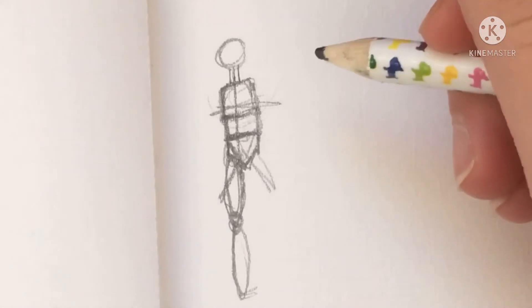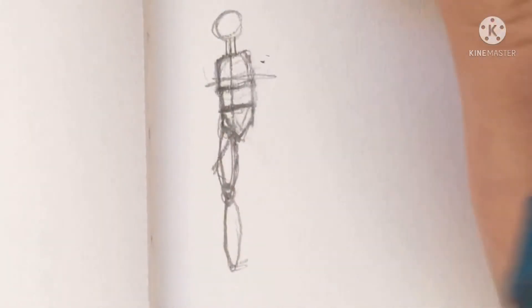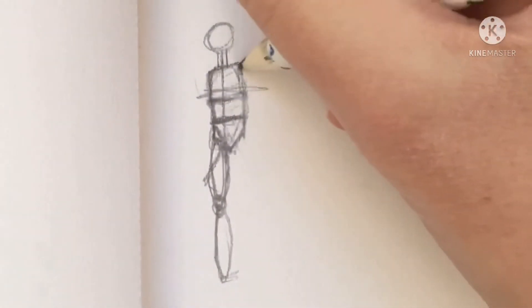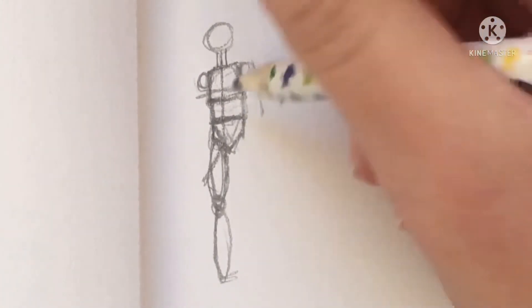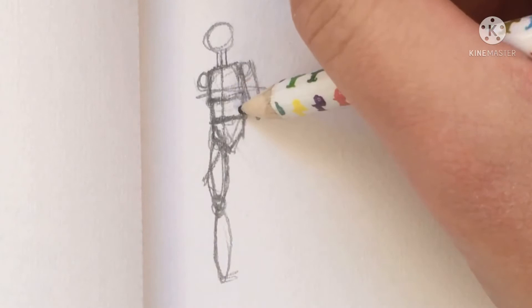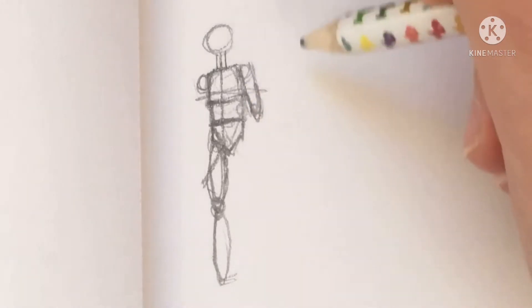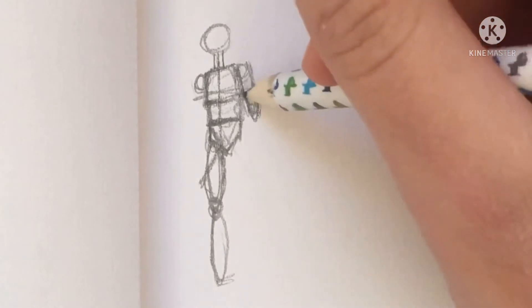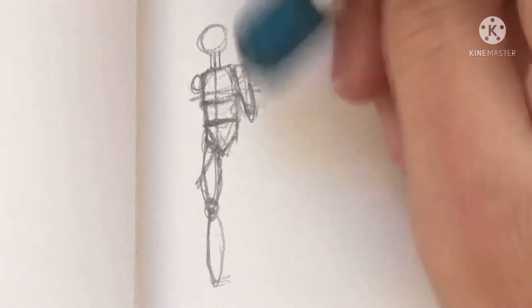We're gonna skip that other leg but erase that part because it looks really dumb. And then two circles for the shoulders. The elbow, if you picture it, is like right in between this stomach part. That's where the elbow is, so I'm just gonna draw it till about there.